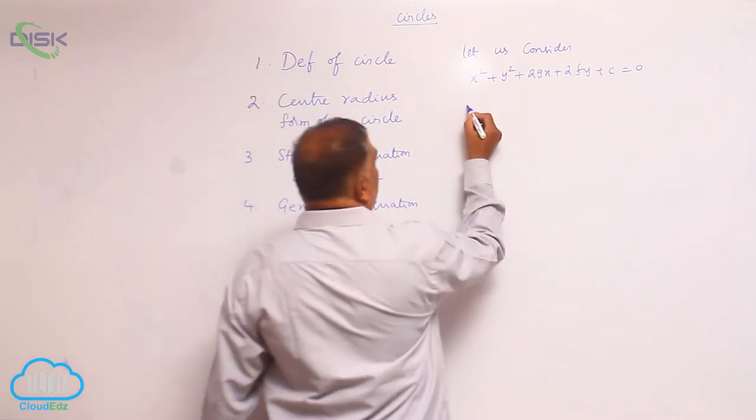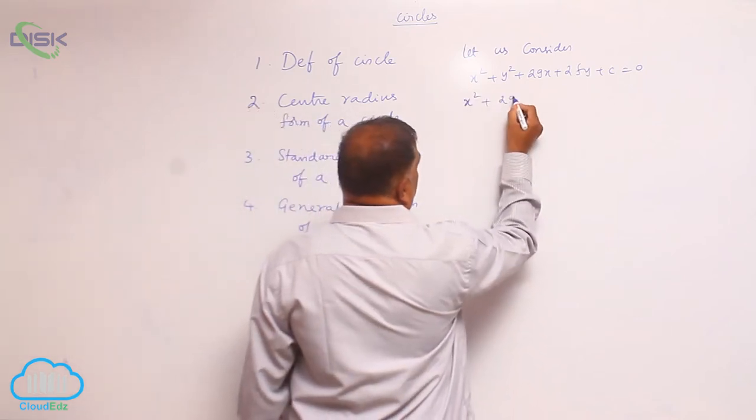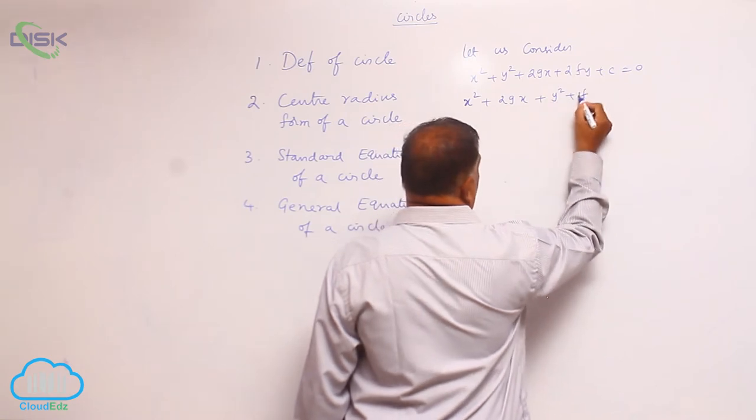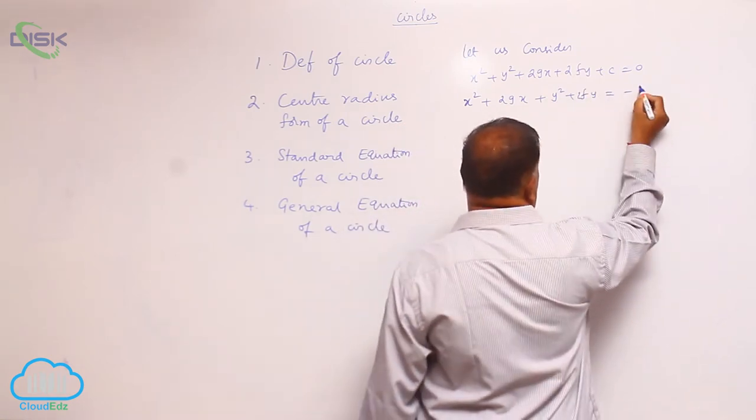First of all, you can rewrite it as x square plus 2gx, y square plus 2fy is equal to minus c.